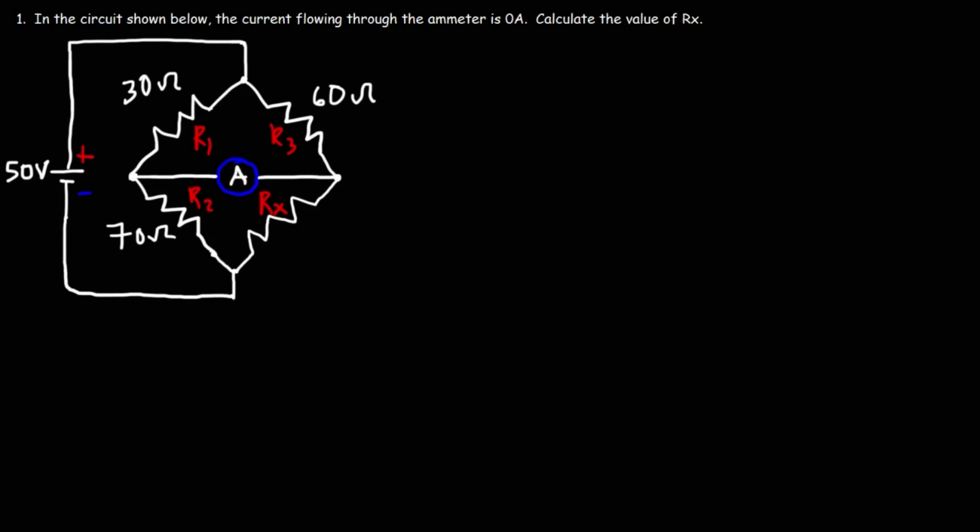Let's begin with this problem. Number one, in the circuit shown below, the current flowing through the ammeter is zero amps. Calculate the value of Rx.